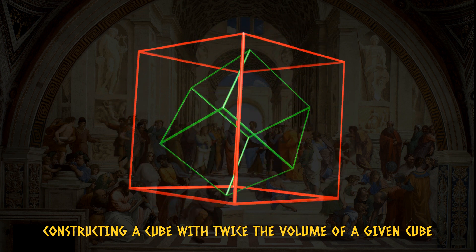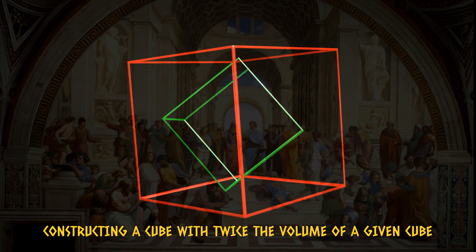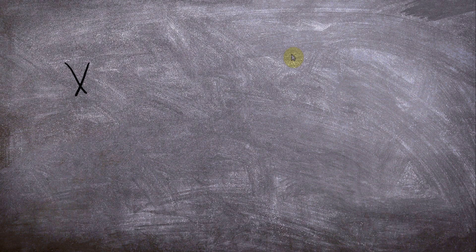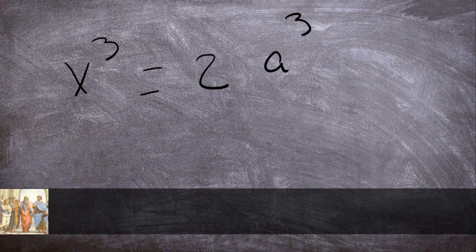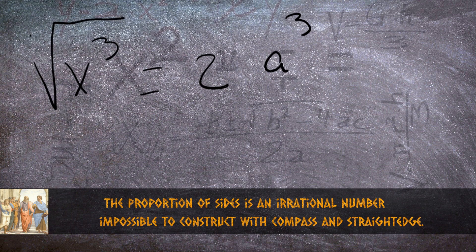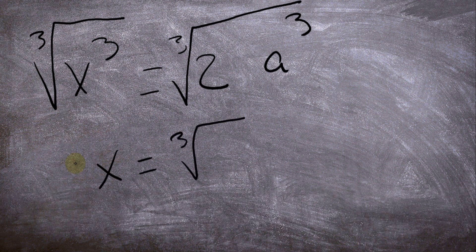Doubling the cube appears to be simple, but actually is not. When the side is doubled, the volume is 8 times the original. What is the proportion of the sides? The new one must have the side of the original times the cubic root of 2, and this irrational measure is geometrically impossible to do with compass and straightedge.